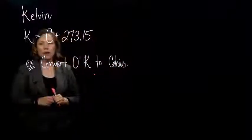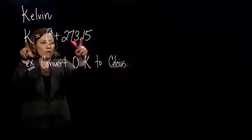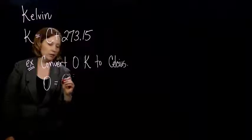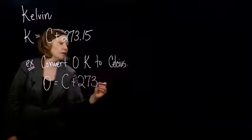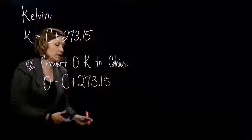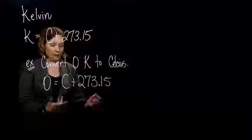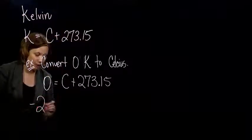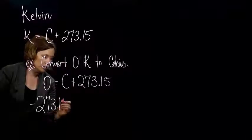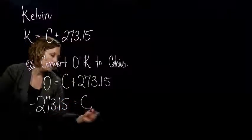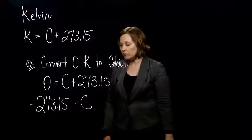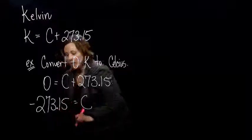So if I wanted to do that, I just plug it into my formula up here. I put zero equals C plus 273.15, and again, I'm solving a little simple equation. I subtract 273.15, and I get negative, because zero minus 273.15 is just negative 273.15 equals C. And this actually is kind of a cool number.